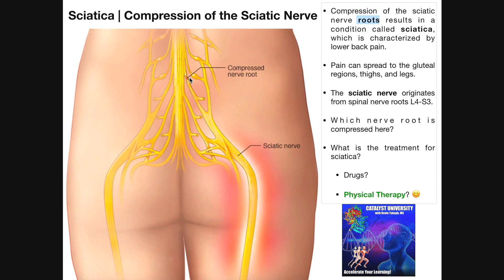One thing that can cause nerve root compression is excessive or quick rotation of the back, which can herniate a disc. If a disc herniates in the right way, it bulges out and can compress the nerve root. Interestingly, intervertebral discs can actually heal themselves — they don't necessarily require surgery. With proper treatment, physical therapy, and exercise, you can heal those intervertebral discs and relieve the compression. In terms of treatment for sciatica, drugs are not really recommended as they won't fix the problem. Physical therapy and exercise are the most logical solutions.